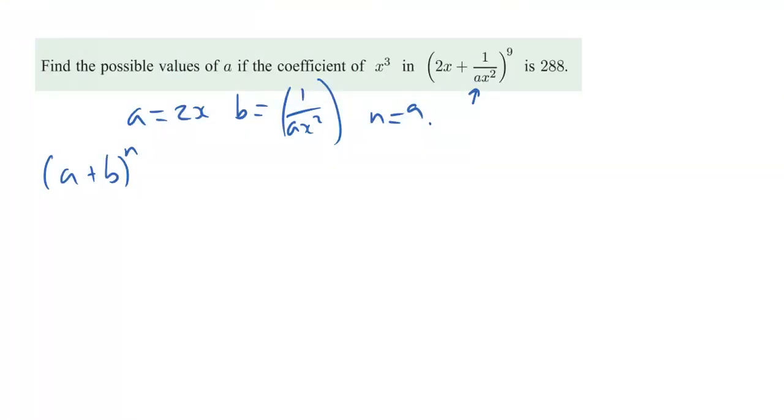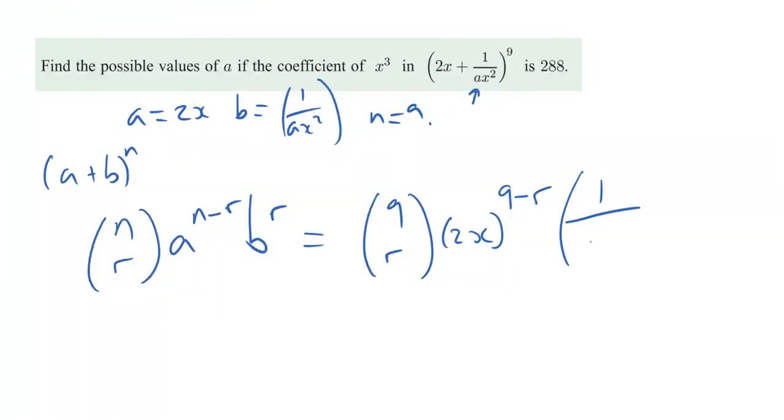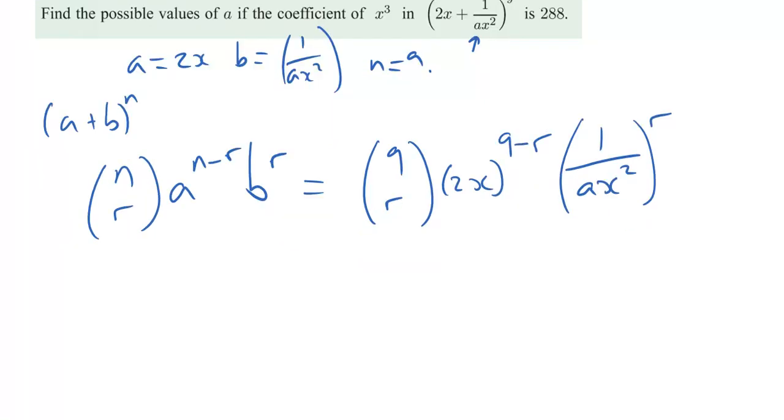Right. Let's put this into the generic formula for a typical term. Now that is n choose r times a to the n minus r times b to the r. Right, we've used it before. So let's pop it in. So we know that we've got n is 9. We don't know what r is yet though. We're going to have 2x to the power of 9 minus r. We're going to have 1 over ax squared to the power of r though. So r is what we've got to find.